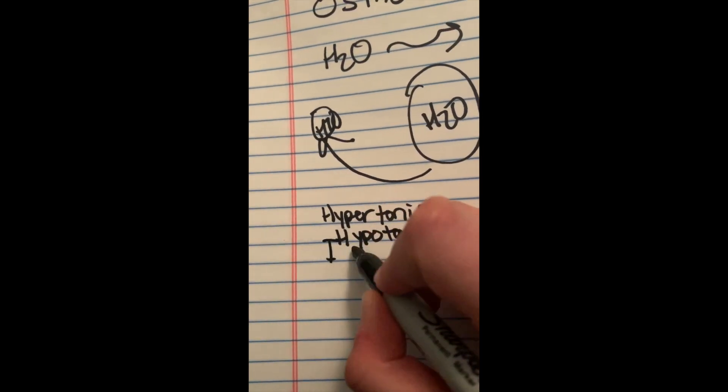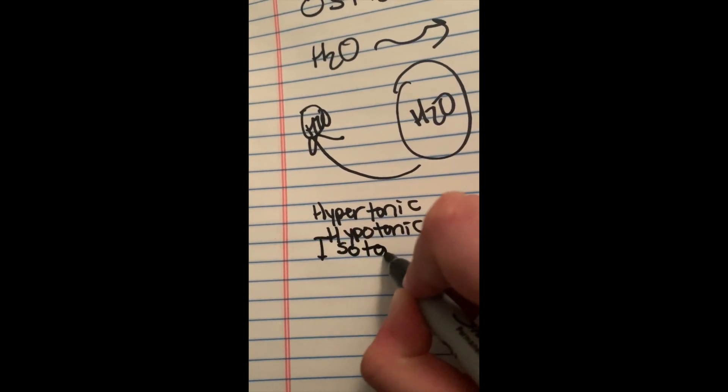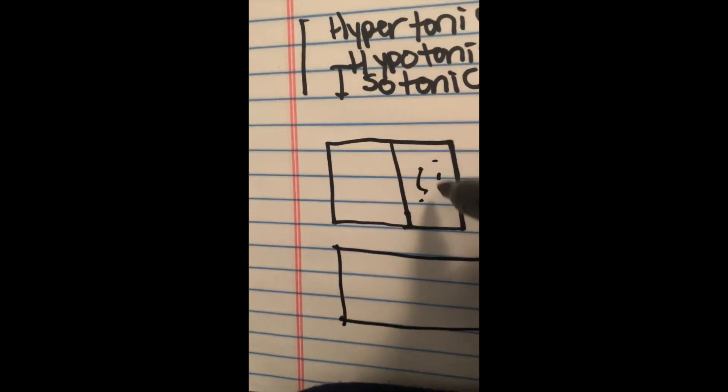When two things are compared in osmosis, they can be called hypertonic, hypotonic, and isotonic. These may sound like big words,